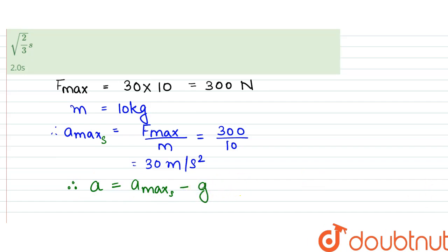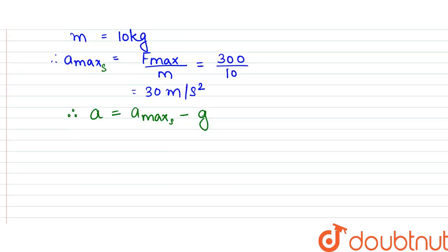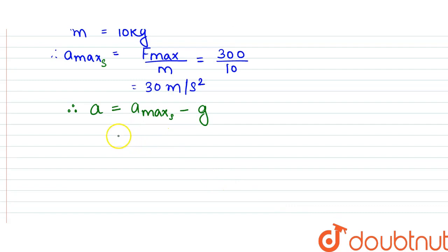It's a = a_max - g, because due to gravity it would be pulled towards the earth. So that would be equal to 30 - 10, which equals 20 m/s².